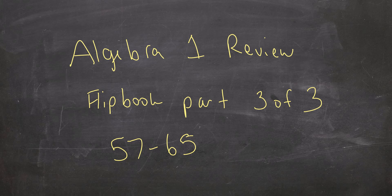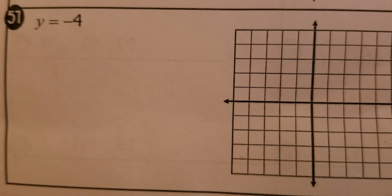Alright guys, we're just going to go over the last couple problems of the review flipbook. I'm going to start with 57 and then move on from there. With all these, I've been starting with an xy chart, which is what I seem to like the best. There are other ways to do it, but I just think this is the easiest. So I'm going to make an xy chart.